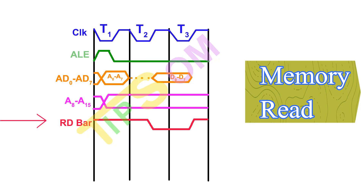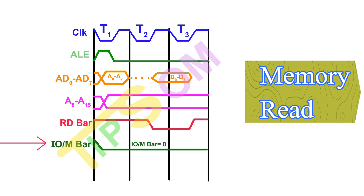Next is the RD bar — this is new compared to opcode fetch. The RD bar is an active low signal; it will go low when data is being read from memory. That is the main memory read cycle. It will be low when D0 to D7 is active, meaning when the data is being accessed. Remember, the memory read cycle is the operation where data is read from a specific memory location.